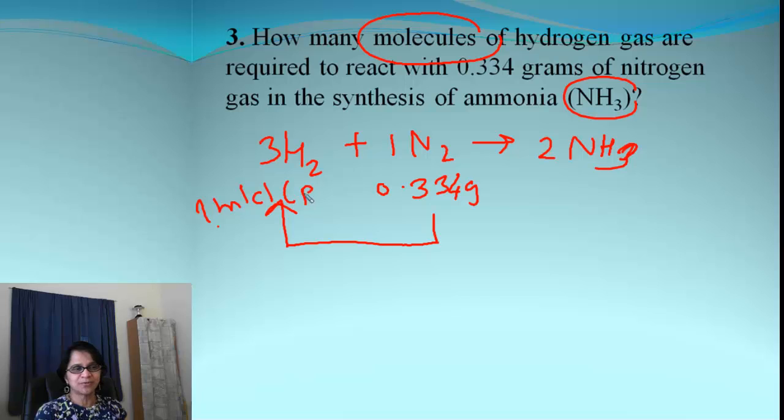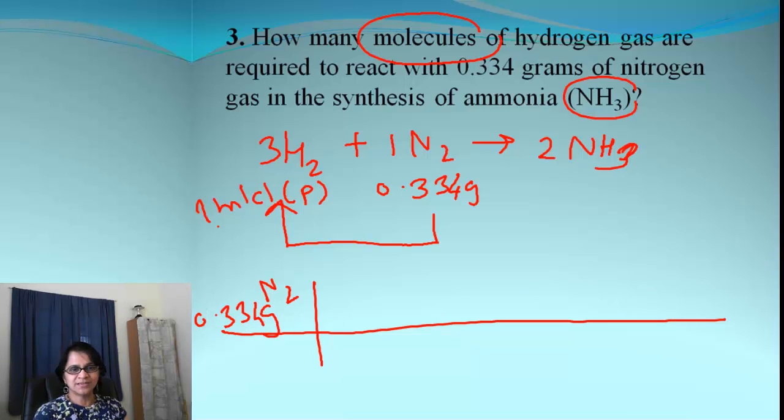We are looking for molecules. Molecules of hydrogen. That means, it's actually asking us for particles. So let's begin again over grams of N2. That's the beginning point. 0.334. Then we move on to moles. That's our bridge.